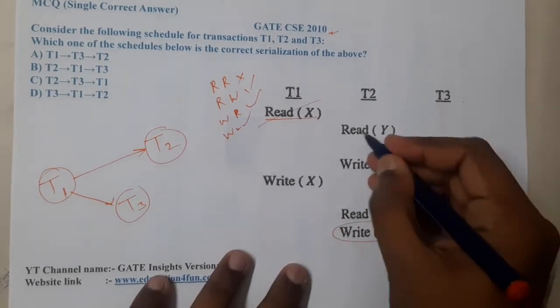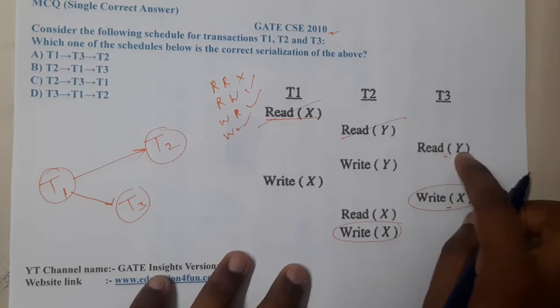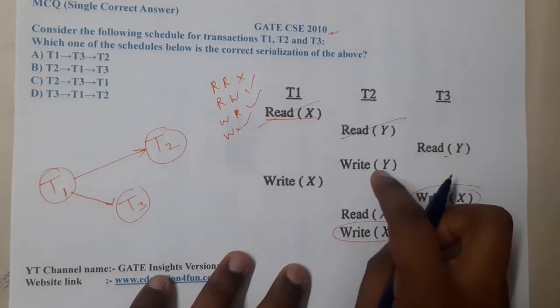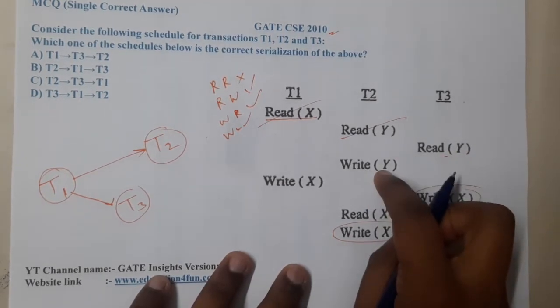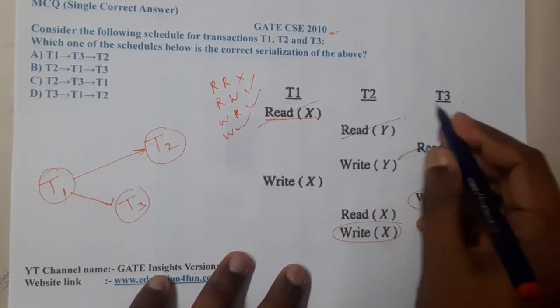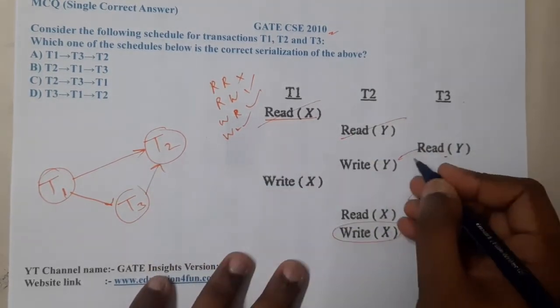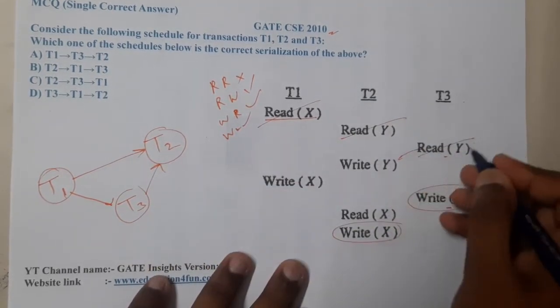Read of Y versus read of Y — no issue. But read of Y versus write of Y is an issue, so we draw an edge from T3 to T2.